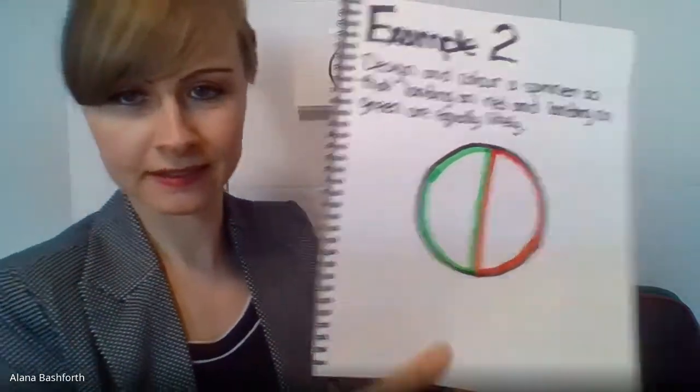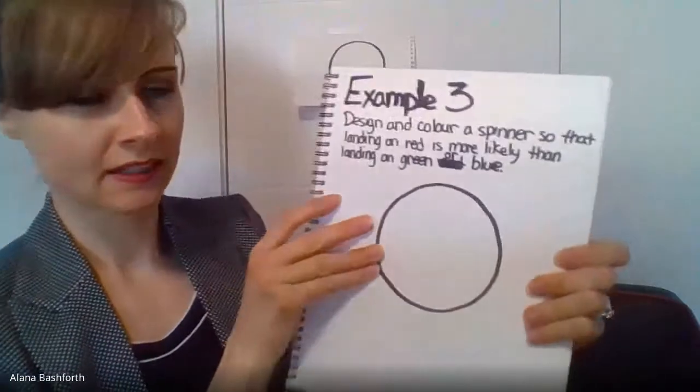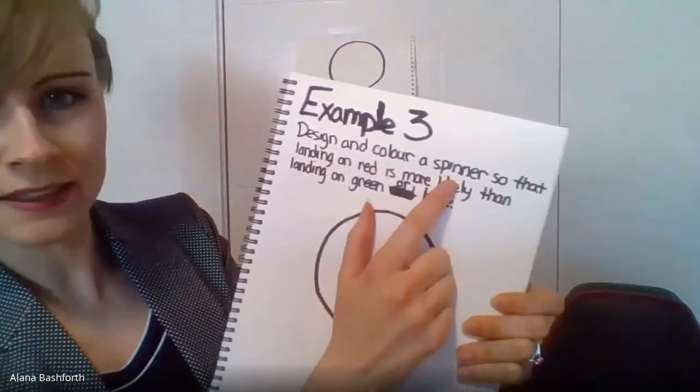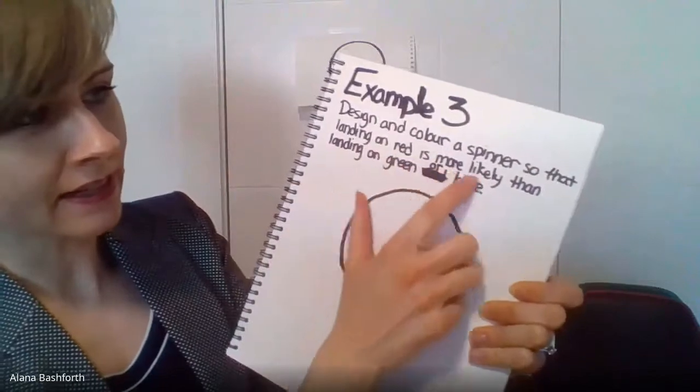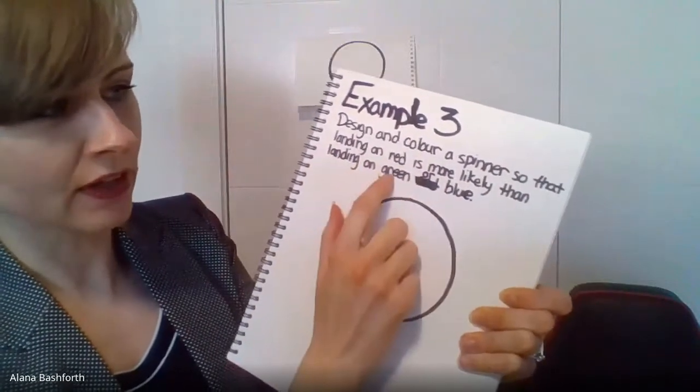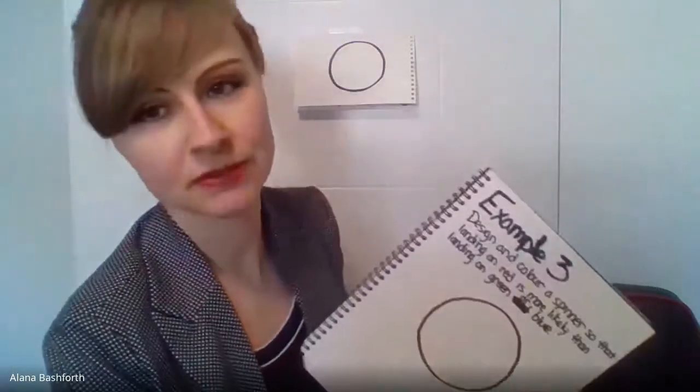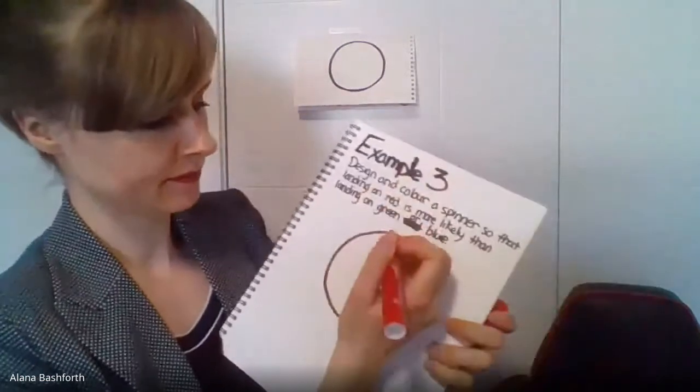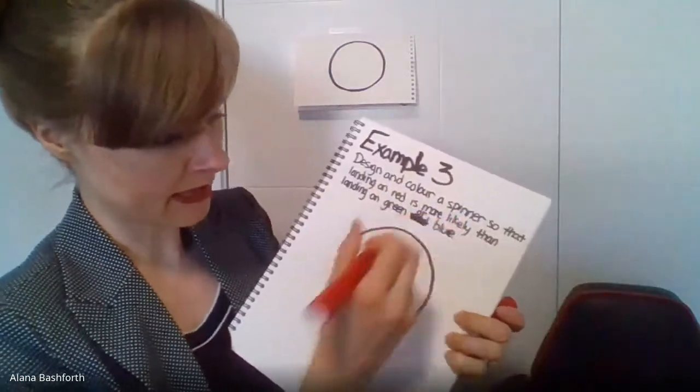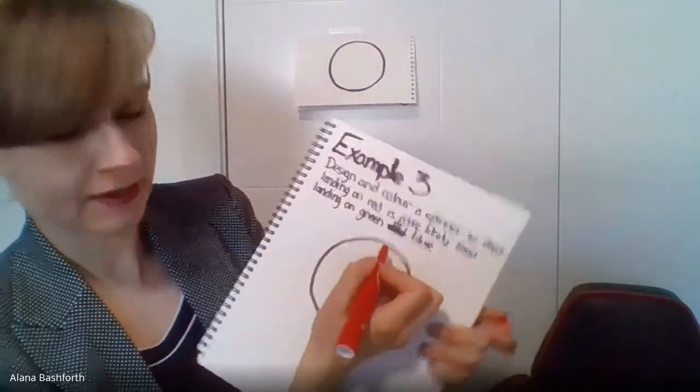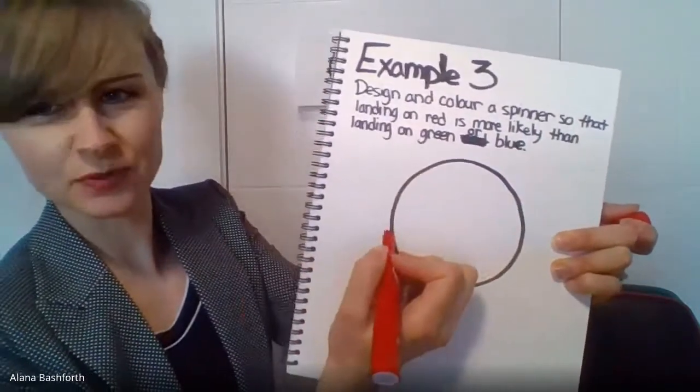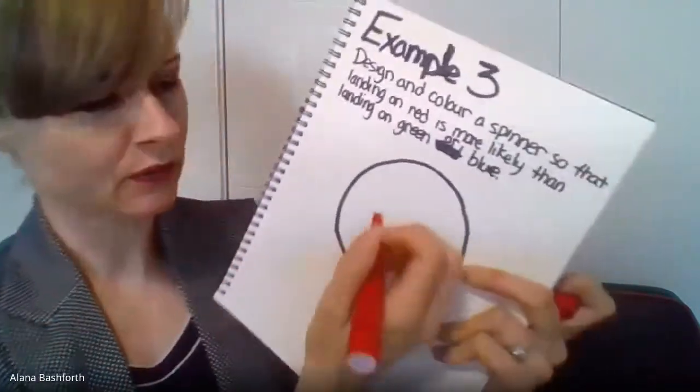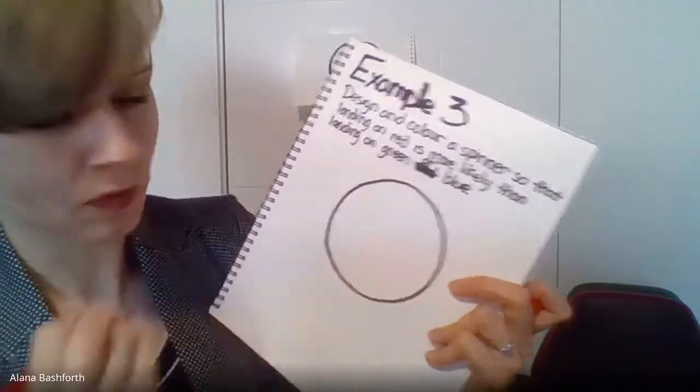And the last one, example three: design and color a spinner so that landing on red is more likely than landing on green or blue. So red has to be the most. So I'm gonna make red. Now, you always need to make it go through the center - like, I couldn't draw red like a cross. That's weird. No, can't do that. You have to always make it go through the center.